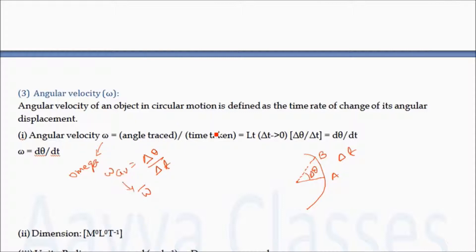Omega average is equal to angle traced divided by time taken. If the particle during the same time delta t makes more and more angular displacement, then the angular velocity of that particle will be more. This is our average angular velocity. Now if we reduce the time delta t, we get the angular velocity at that particular point, which we call instantaneous angular velocity.